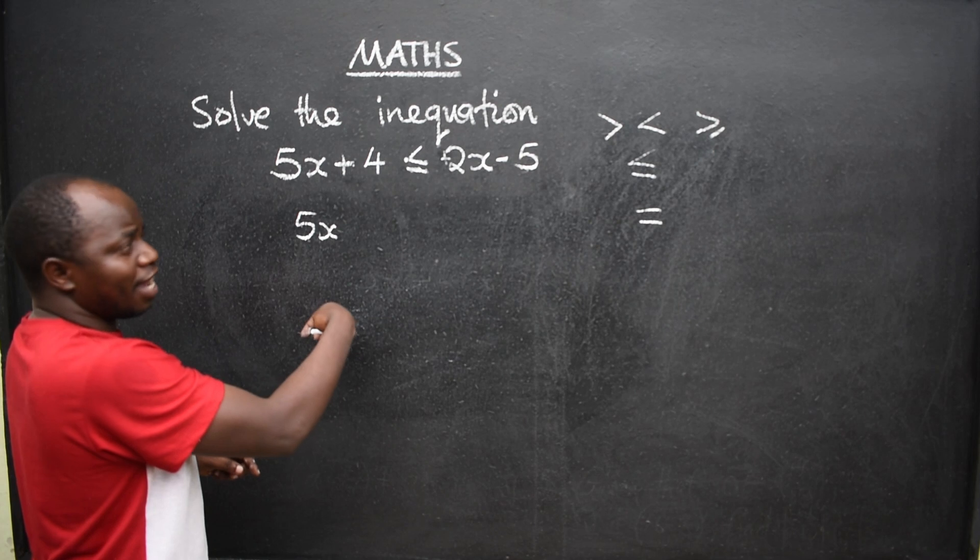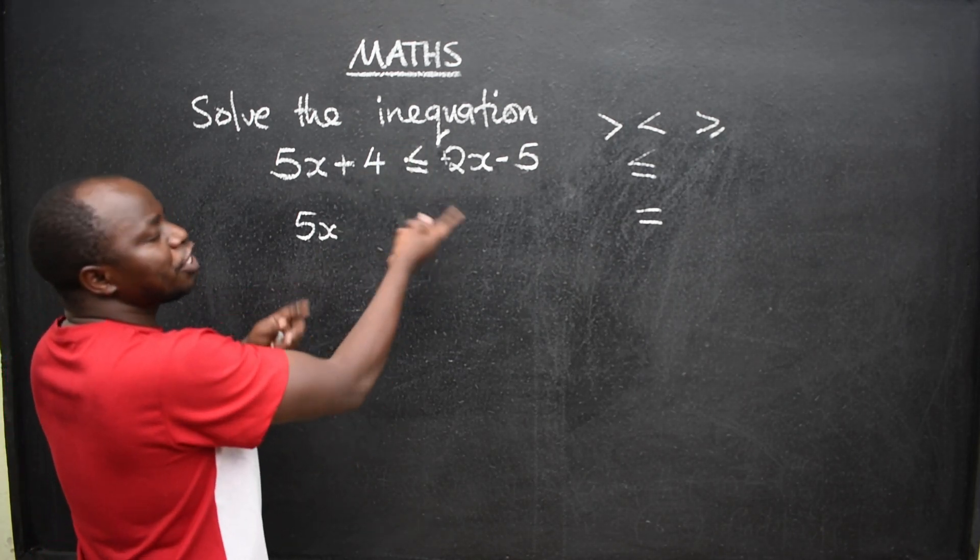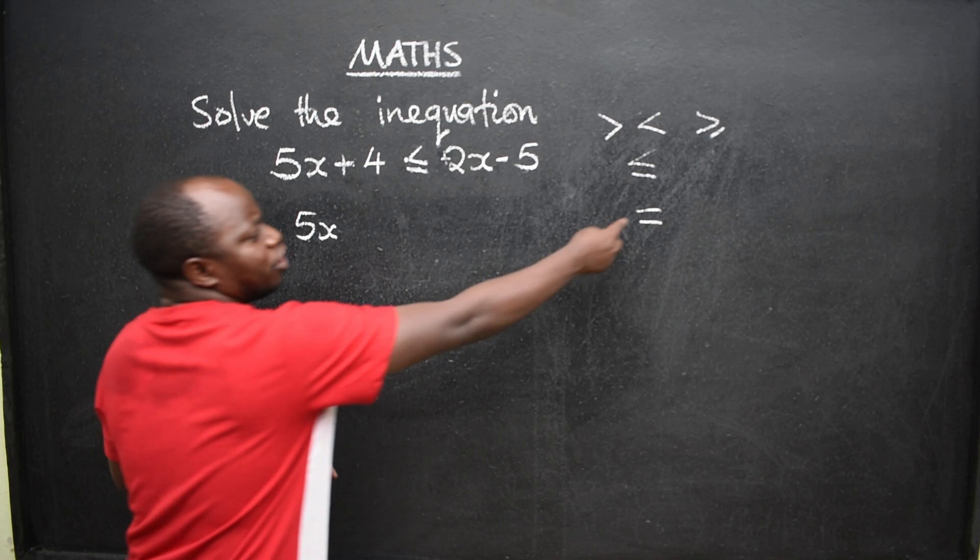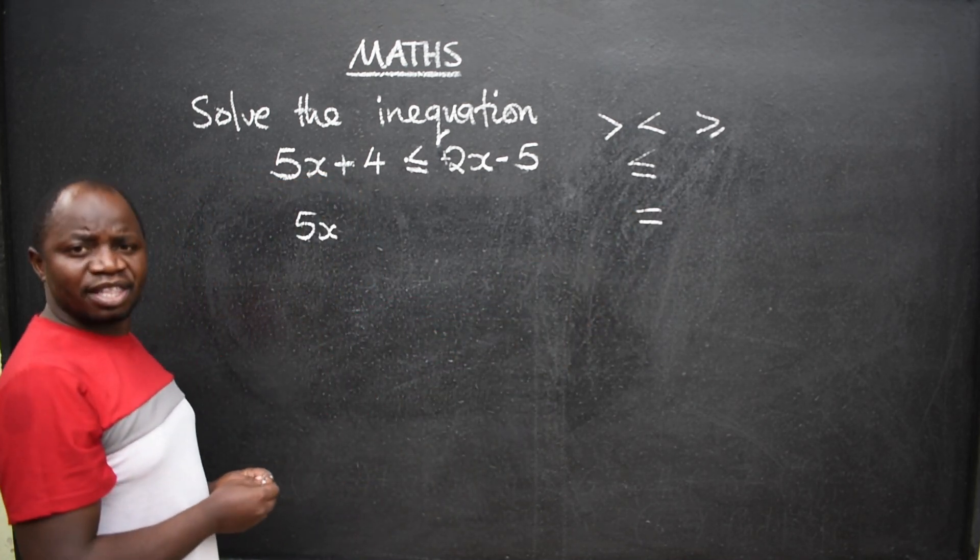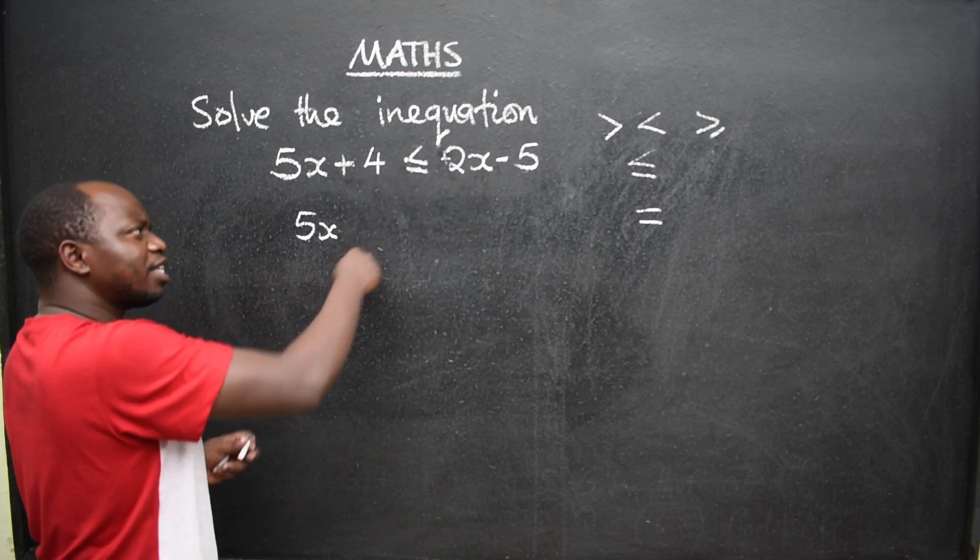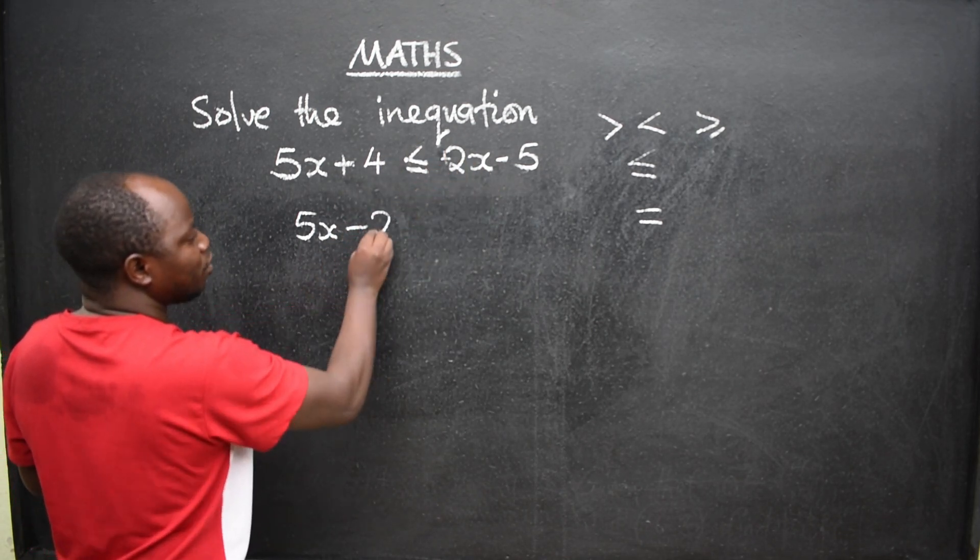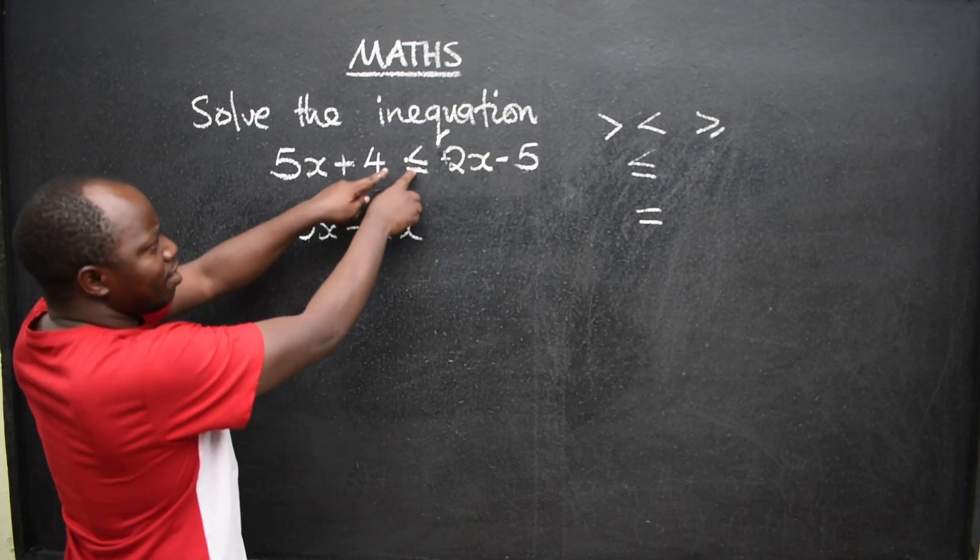So, this 2x is positive on the right-hand side. Have you seen? Once it crosses the inequality sign, it will change, just like it changes when we are dealing with equations. So, since it is positive here, once it crosses, it becomes negative. So this will be negative 2x.